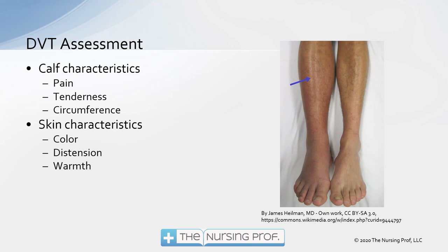Check skin characteristics — look at the color. You can see a difference in skin color between the two calves; the affected one is a little larger and a little redder. You can see the distension and the color change. If we felt it, we may also find it's warmer than the unaffected side.